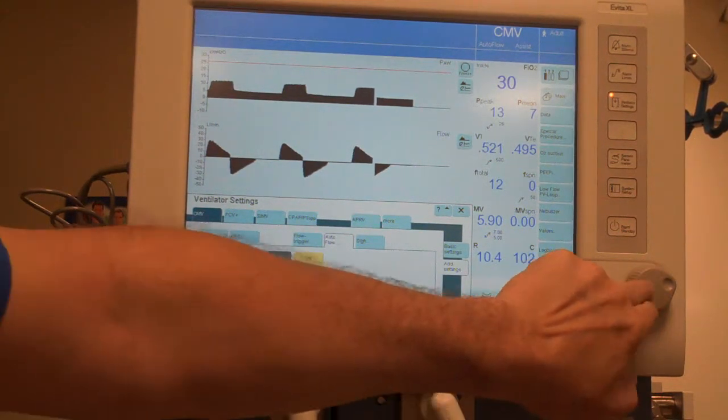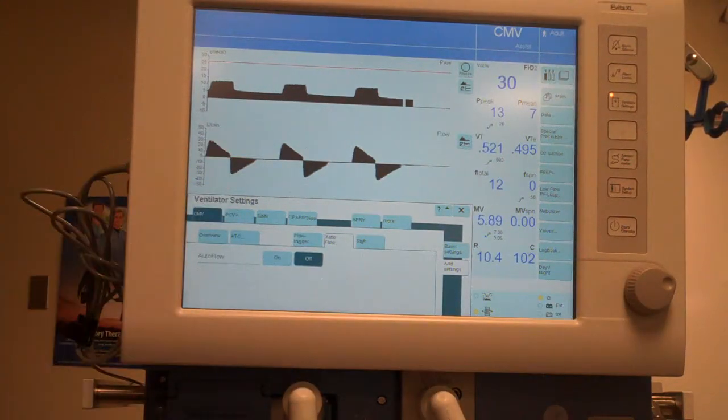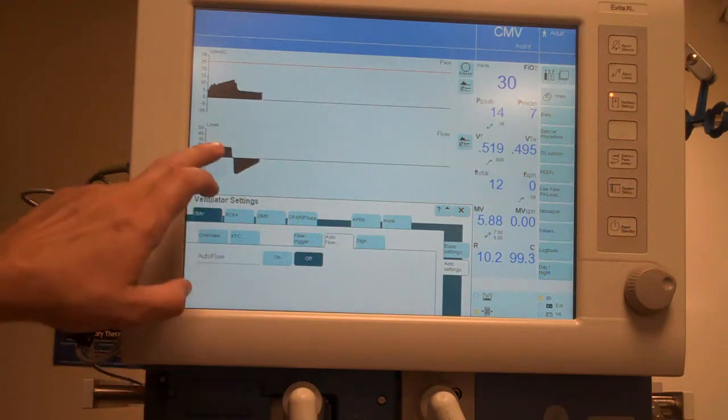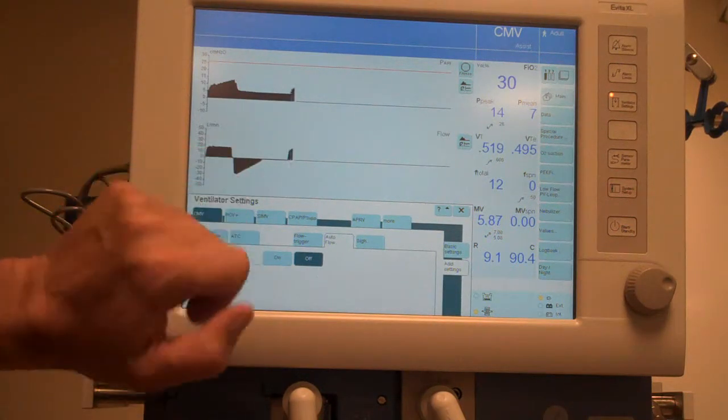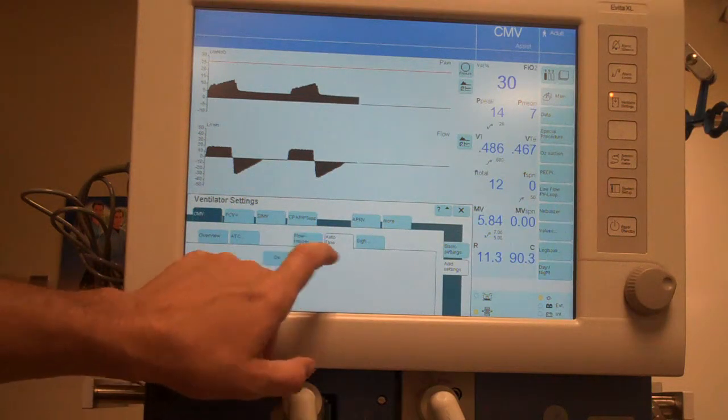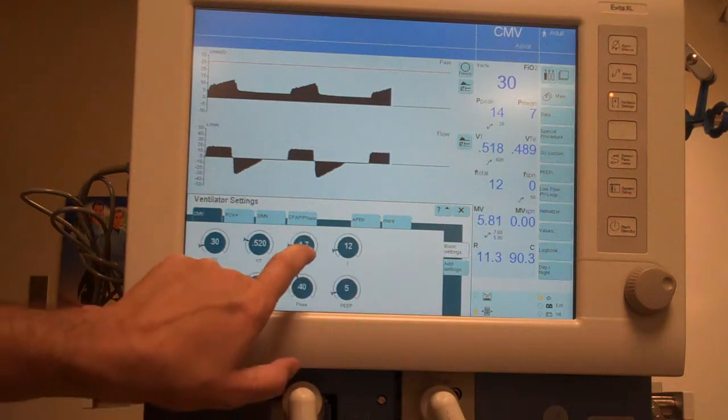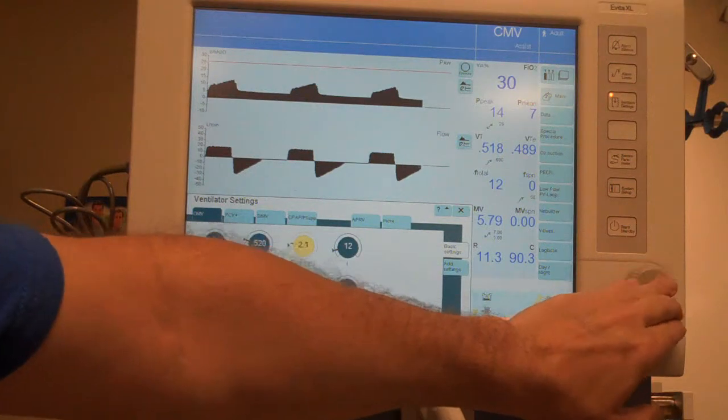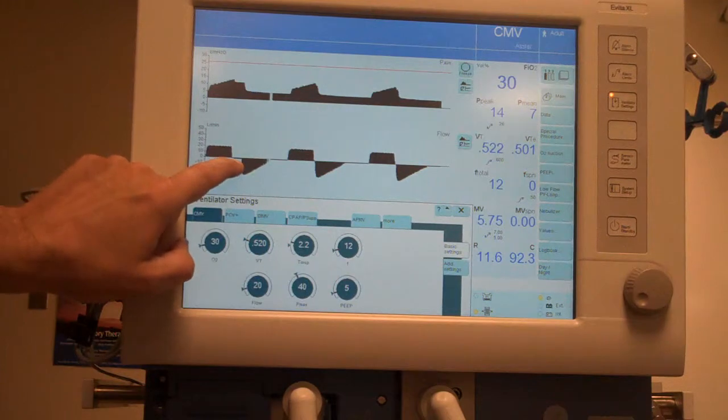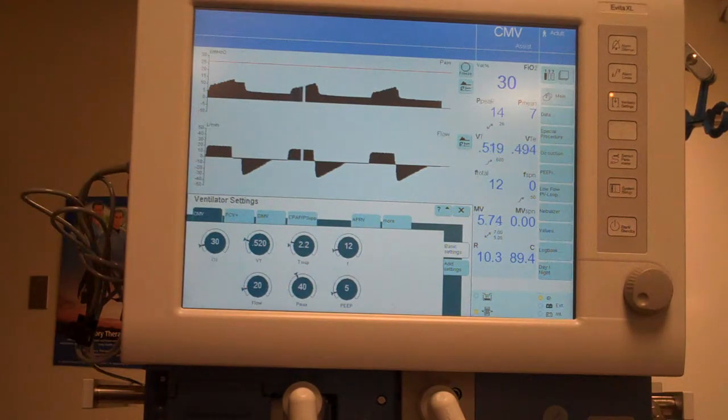In doing so, I will have a square wave flow pattern and a rectilinear rise to pressure. I also need to extend the inspiratory time so I create a plateau, and there is my plateau period and you can see the value there.